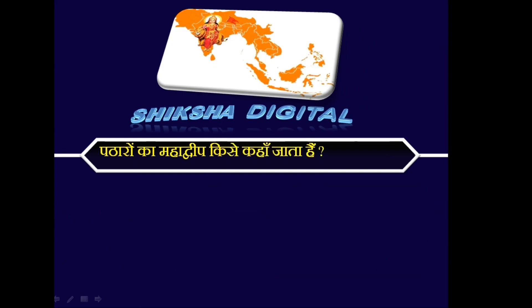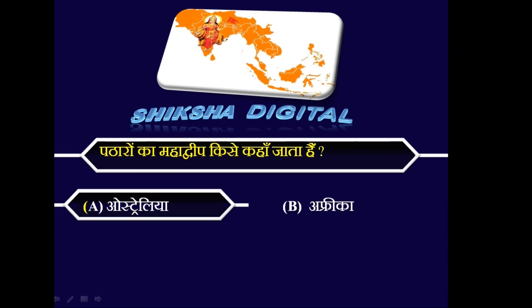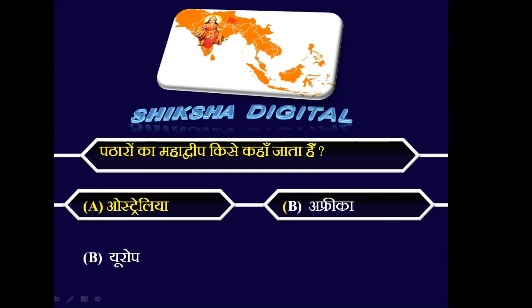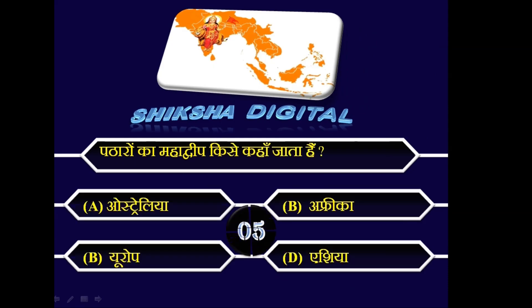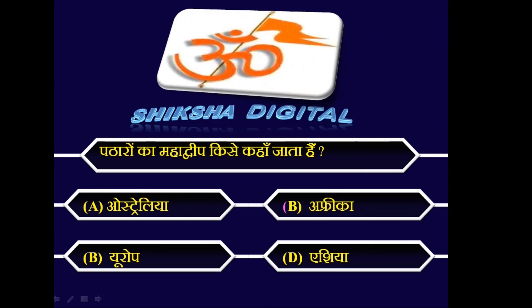अंधेरों का महाद्वीप किसे कहा जाता है? A. Australia. B. Africa. C. Europe. D. Asia. Answer: B. Africa.